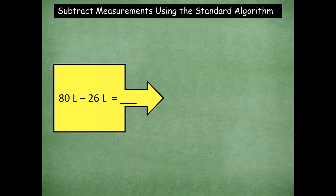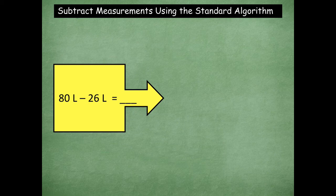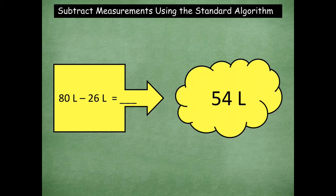Your first problem is 80 liters minus 26 liters. Go ahead and use the standard algorithm to solve this subtraction problem. Click pause, solve it, click play when you're ready to go over and see the answer. Okay, here we go. Ready? 54 liters. I'm sure you guys got that one.